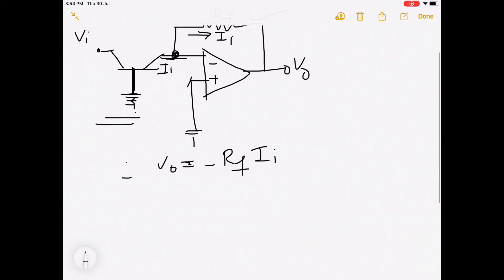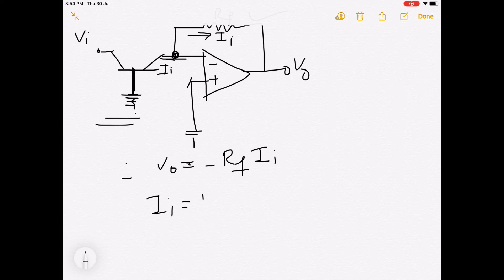We have seen in logarithmic amplifier that transistor current Ii is equal to Ic, the collector current. This is base, this is emitter, and this is collector. Ii equals Ic equals Is times e raised to qVbe divided by kT.